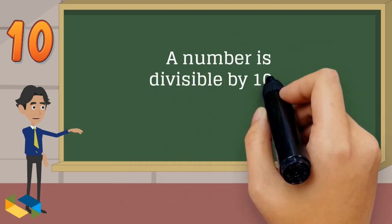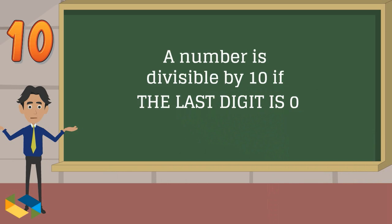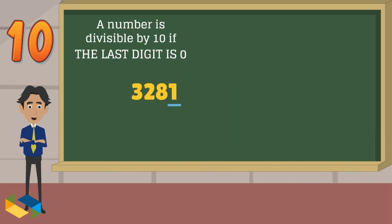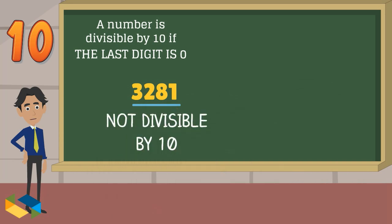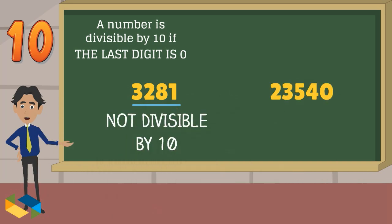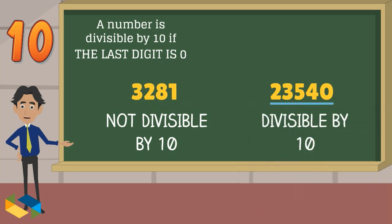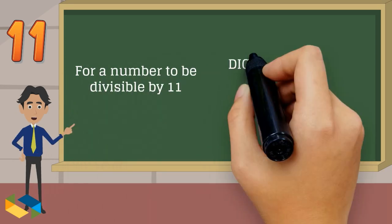The divisibility rule for 10 is simply a check of whether the last digit is 0. In 3,281, the last digit is not 0, so it is not divisible by 10. However, in 23,540, the last digit is 0, so it is divisible by 10.